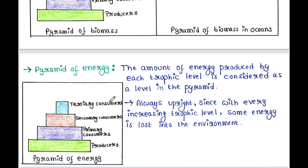Again, when tertiary consumers get energy from secondary consumers, some amount of energy is lost in the environment, so tertiary consumers always have less energy compared to secondary consumers. Hence this type of pyramid is always upright — you will never get an inverted pyramid in the case of pyramid of energy.